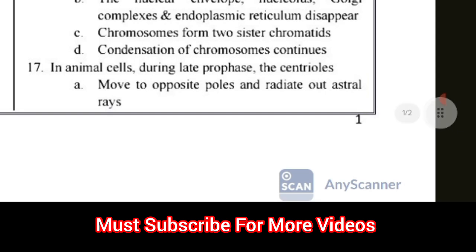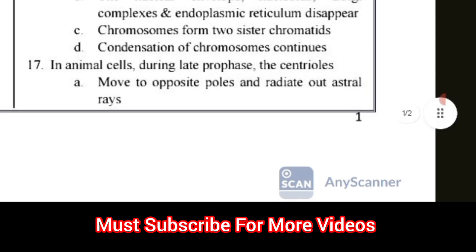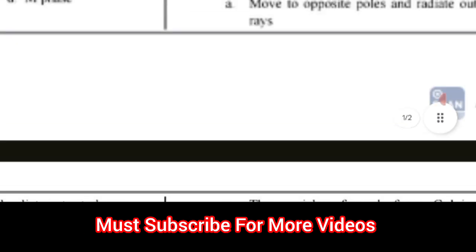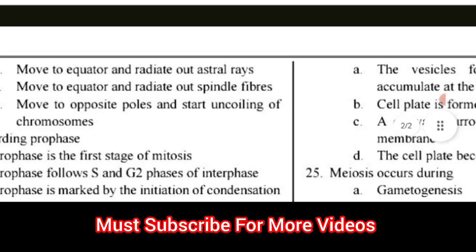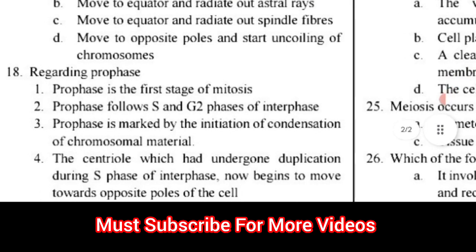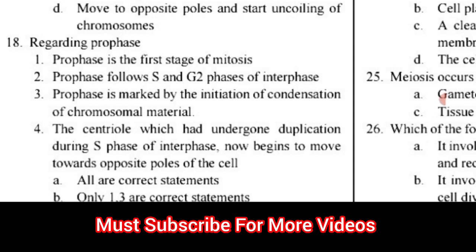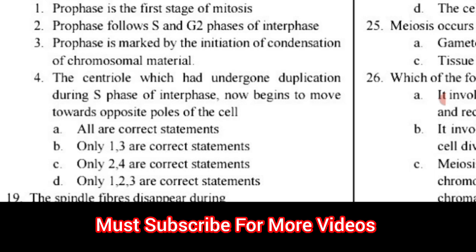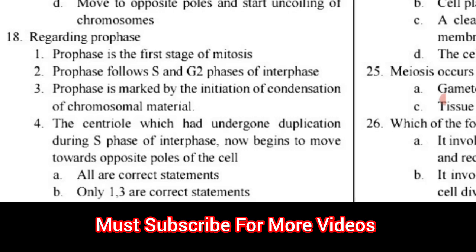Question number 17: In animal cell, during late prophase, the centrioles — the correct answer for question number 17 is option A. Question number 18: Regarding prophase — options include: prophase is the first stage of mitosis; prophase follows G1 and G2 phase of interphase; prophase is marked by initiation of condensation of chromosomal material; the centriole which had undergone duplication during S phase now begins to move towards opposite poles of the cell. The correct answer for question number 18 is option A.